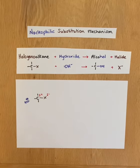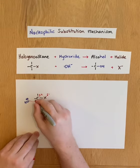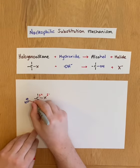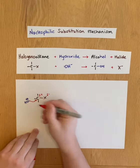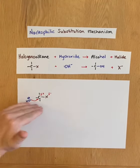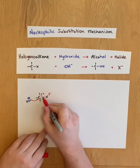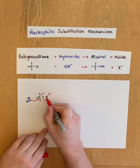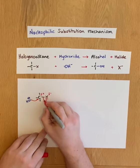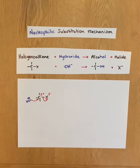That pair of electrons will be attracted and form a bond to the delta positive carbon of the halogenoalkane. As this bond is forming, the pair of electrons in this covalent bond between the halogen and the carbon will both move onto the halogen.